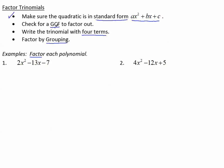Next, check for a greatest common factor. This has 2, but I can't factor out 2 from 13 or from 7. This has x, but the constant term does not. So there is no GCF, but I did check.